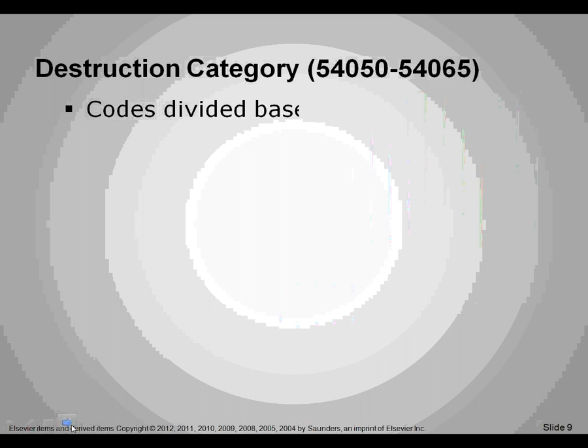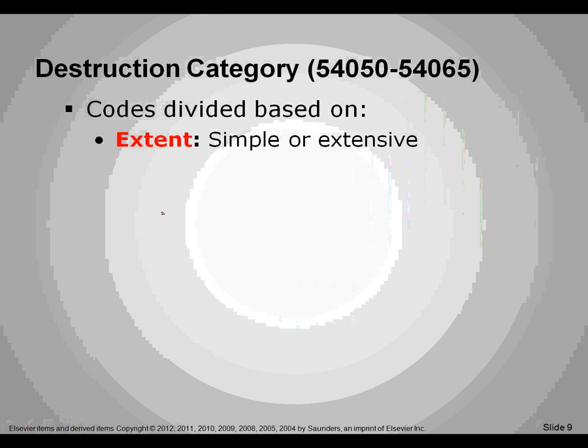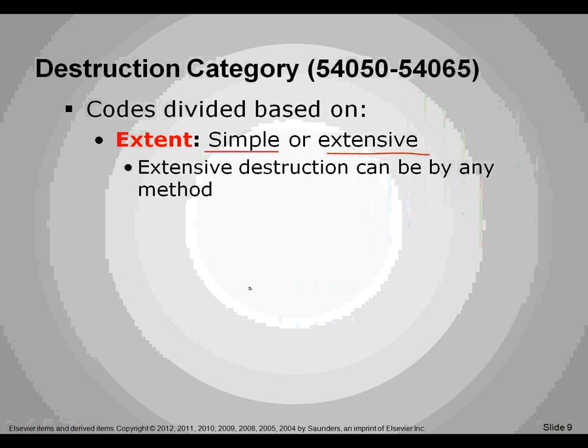Moving on, we have destruction procedures. The codes are divided based on the extent — whether it is simple or extensive. Extensive destruction can be done by any method, such as cryotherapy, laser, or cauterization, basically destroying the tissue. If destruction is done, there are definitely no biopsies for that service, so we will not be coding for a biopsy because the tissue has been destroyed.